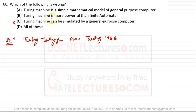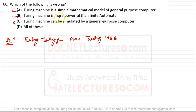Turing machine is more powerful than finite automata because it has infinite tape and can perform more powerful operations. It is an abstract/hypothetical/mathematical model of a computer, given by Alan Turing in 1936, capable of simulating any algorithm. Option C — that Turing machine can be simulated by a general purpose computer — is false and is the answer.